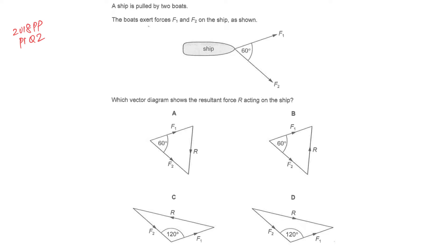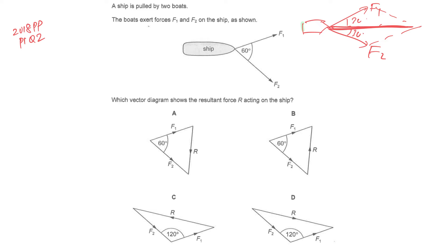For this question, two forces F1 and F2 act on a ship. If both forces are equal in magnitude and 30 degrees from the horizontal line, the resultant must be along the horizontal. However, here F1 and F2 may not be equal and are 60 degrees apart but not equally spaced from the horizontal. One thing is certain: the resultant force must be in that general direction.